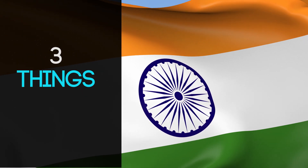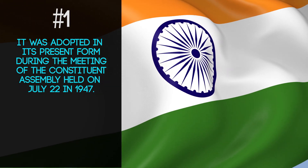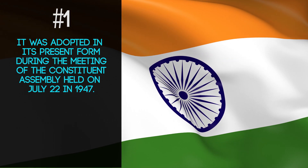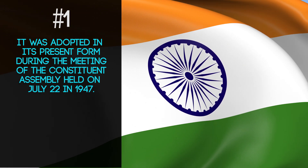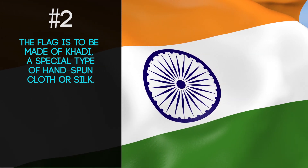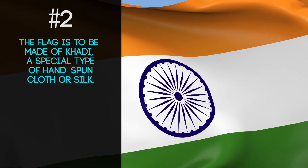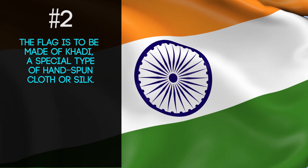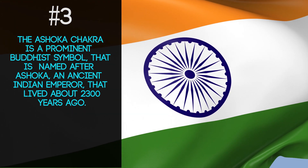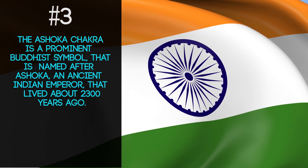Three things worth noting about the flag. The national flag of India was adopted in its present form during the meeting of the Constituent Assembly held on the 22nd of July in 1947, a few weeks before India's independence from the British on August 15th, 1947. According to the Bureau of Indian Standards, there are strict regulations on what cloth the flag can be made of — by law, the flag is to be made of khadi, a special type of hand-spun cloth or silk. The Ashoka chakra symbol is a prominent Buddhist symbol associated with and named after Ashoka, an ancient Indian emperor who lived about 2,300 years ago.